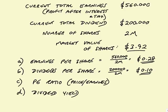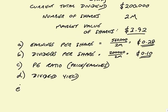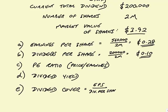Dividend per share defines itself. Most companies don't pay out all their earnings as dividend. Here, they're only paying out 200,000. You have 2 million shares — that's 10 cents a share. Incidentally, I'd better mention dividend cover, because he has asked about it. If you add an E: dividend cover is simply the earnings per share divided by the dividend per share. The earnings are 28 cents, the dividend's 10 cents — that's 2.8.